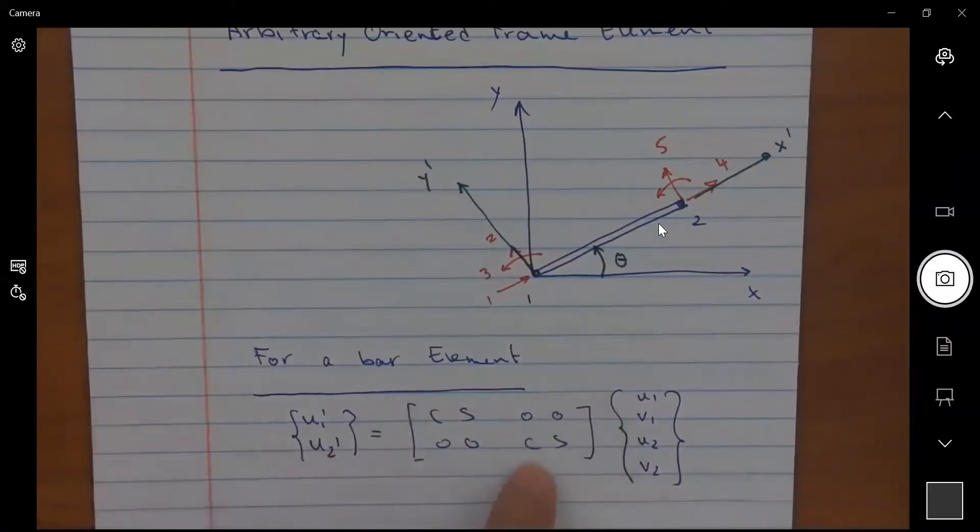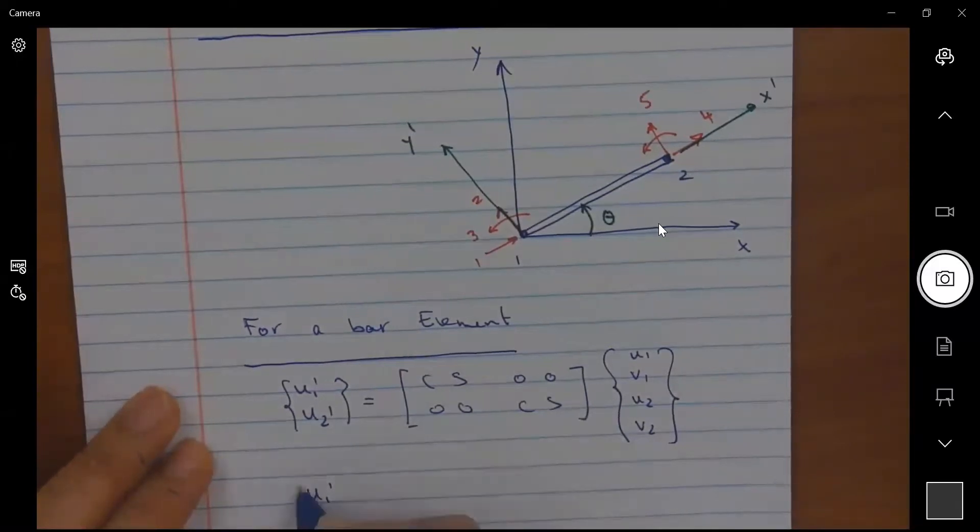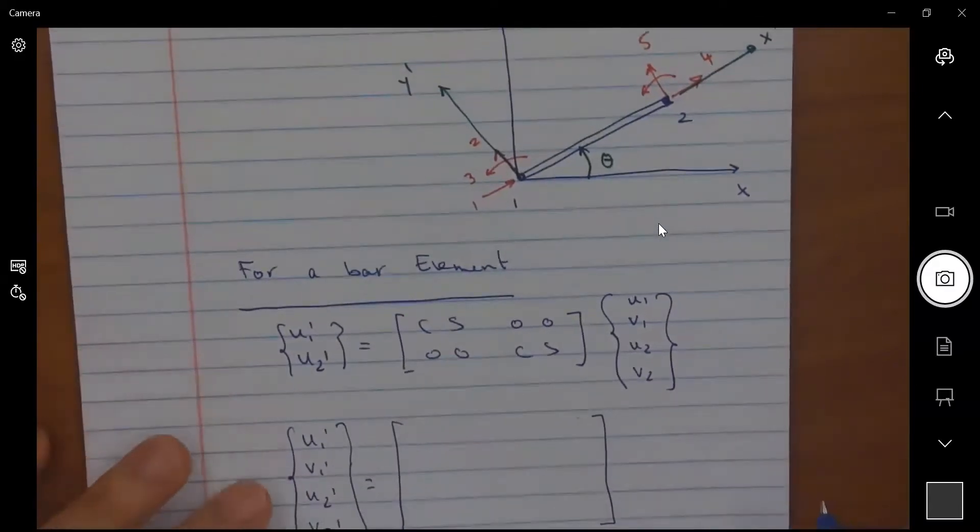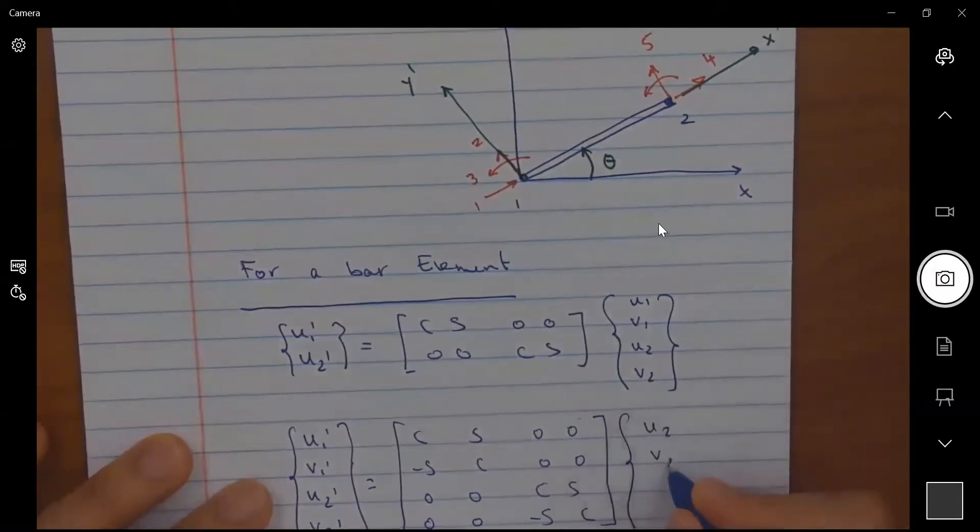And this is really what we needed for a bar element because there was no v2 prime and v1 prime, but should there be a u1 prime v1 prime u2 prime and v2 prime, I could have written that using a four by four transformation matrix as c s 0 0, minus s c 0 0, 0 0 c s, and 0 0 minus s and c multiplied by u1 v1 u2 and v2.